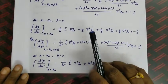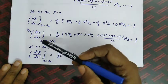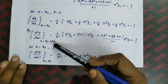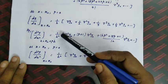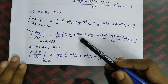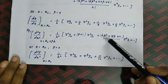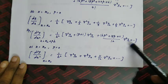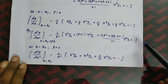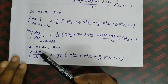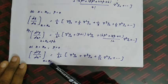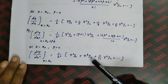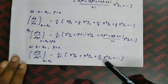Similarly for the second derivative using backward difference: d²y/dx² at x = xₙ + ph equals (1/h²)[∇²yₙ + (p+1)∇³yₙ + (6p²+18p+11)/12 · ∇⁴yₙ + ...].